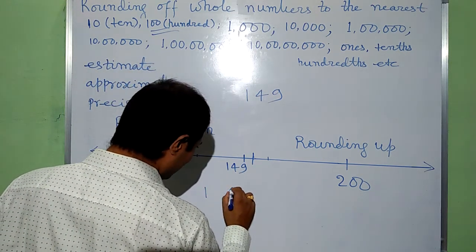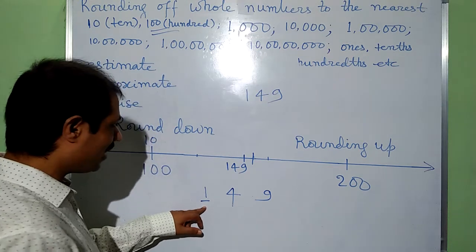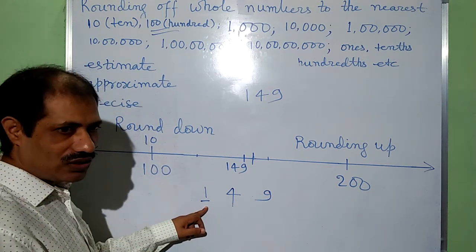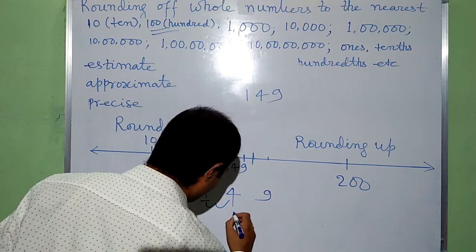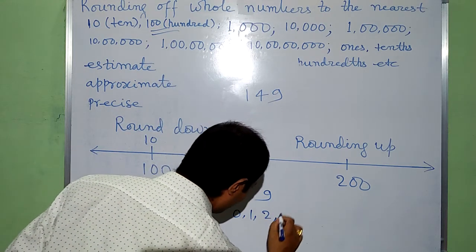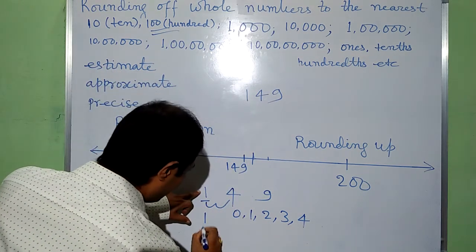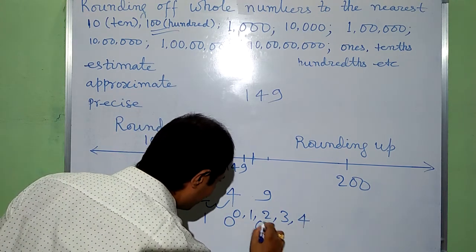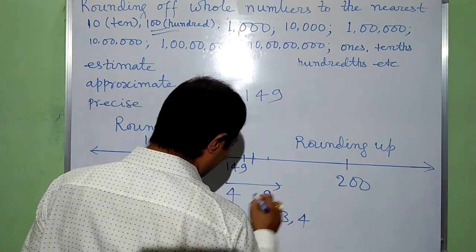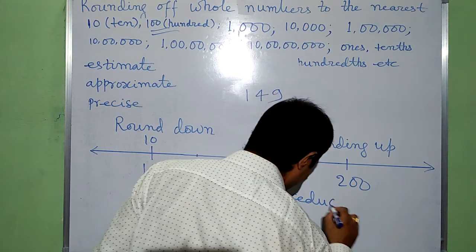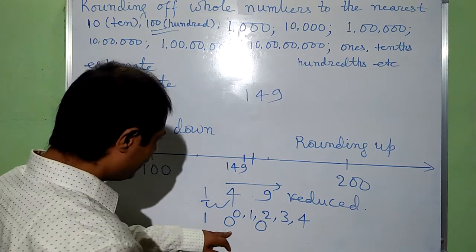We write 149 with place values: 1 at hundreds, 4 at tens, 9 at ones. We have to round to the nearest 100, so the target digit is 1 at the hundreds place. We look at the digit just to the right of this digit, that is 4. Since 4 is between 0 and 4, we need not change the target digit. It remains as it is and the remaining digits are changed to 0. So the result is 100.